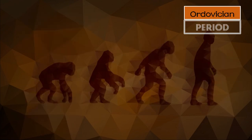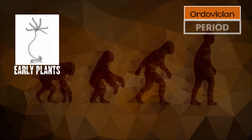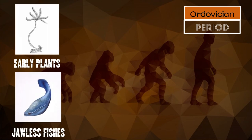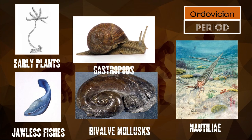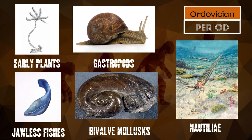Next is the Ordovician period. The Ordovician period extended from 490 million to 443 million years ago. Living things under the Ordovician period include early plants, jawless fishes, bivalve mollusks, nautiloids, and gastropods.